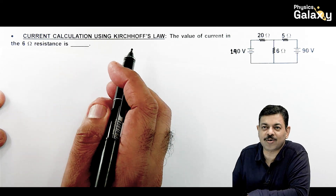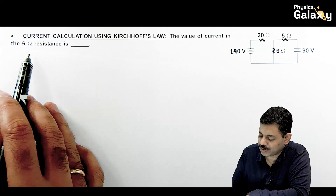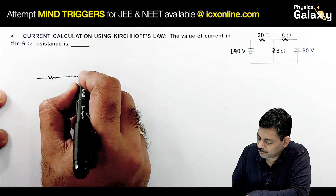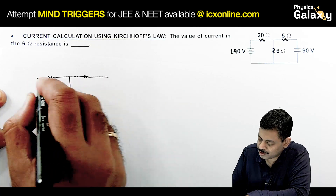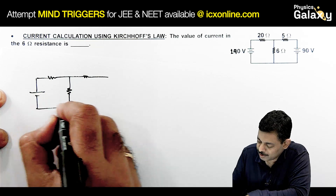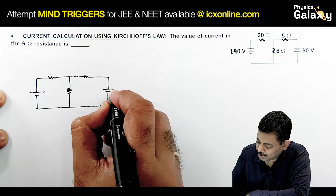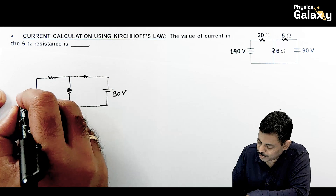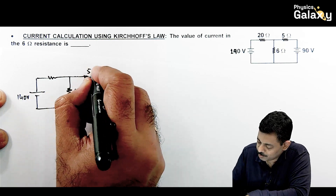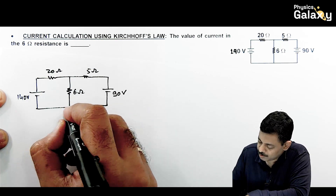Now here is another question for current calculation using Kirchhoff's law. We are given a circuit and need to calculate the current in the 6 ohm resistance. We can directly distribute the potentials and apply KCL to get the result. The circuit has a 90 volt battery and a 140 volt battery with 6 ohm, 5 ohm, and 20 ohm resistances.